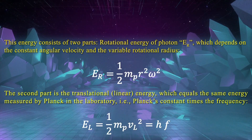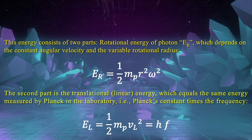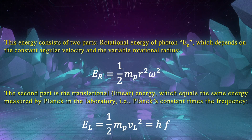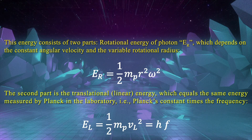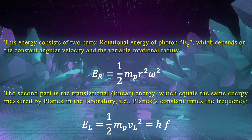This energy consists of two parts: the rotational energy of photon E_R, which depends on the constant angular velocity and the variable rotational radius; and the translational energy, which equals the same energy measured by Planck in the laboratory — that is, Planck's constant times the frequency.